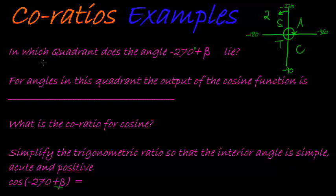In which quadrant does this angle lie? In quadrant 2. For angles in this quadrant, the output of the cosine function is... in this quadrant we see that only sine is positive, which means all the other ratios will be negative. Cosine, therefore, will be negative.